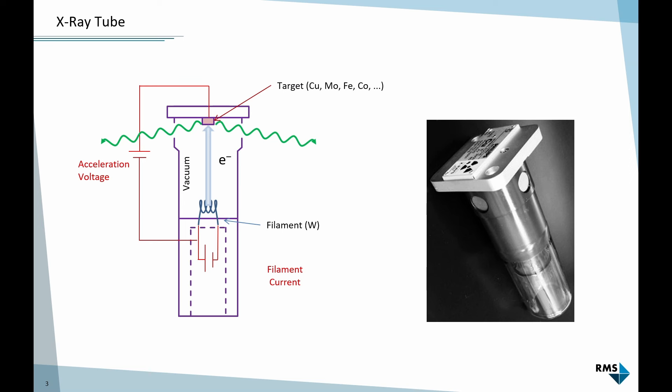This setup is very similar to an old CRT TV or computer screen, which also use an electron beam that scans the screen. When computer workplaces were introduced some decades ago and we all had a big CRT screen in front of us all day, exposure to X-rays was actually a concern. The X-rays were generated by the electron beam colliding with the screen, and we wanted them to be well shielded.